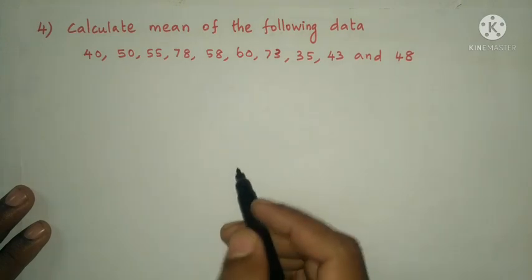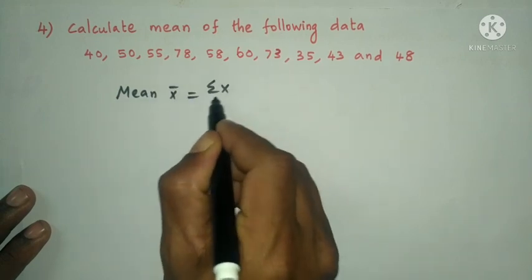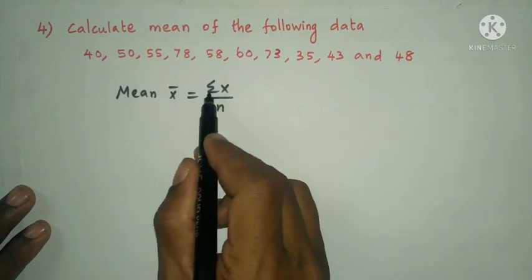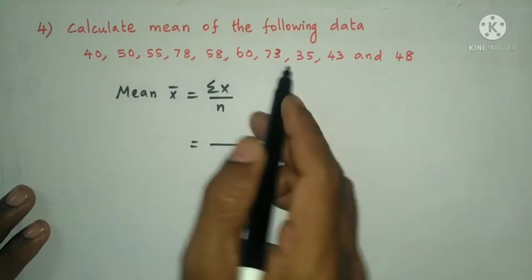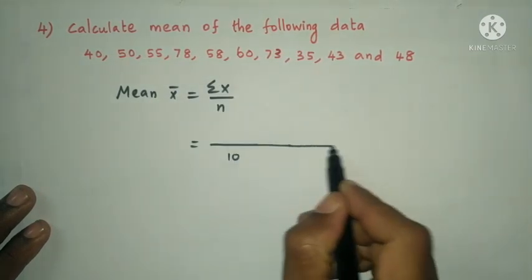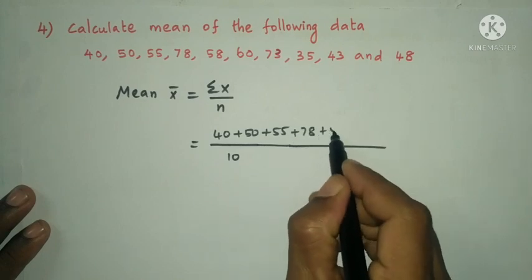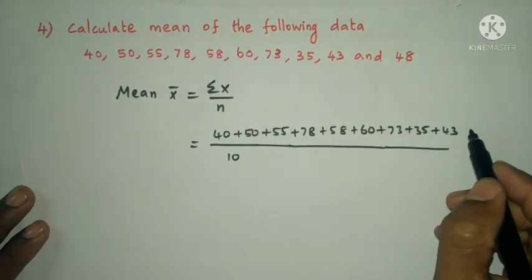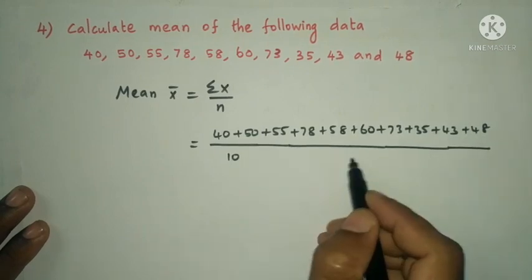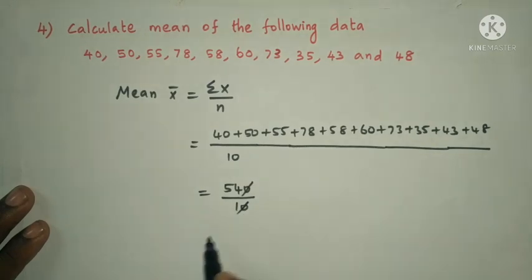Calculate the mean of the following data. Mean formula: x̄ = Σx / n, where n is the number of data. The data values are 40, 50, 55, 78, 58, 60, 73, 35, 43, and 48. Number of data n = 10. Sum = 540. So x̄ = 540 / 10 = 54. The mean is 54.